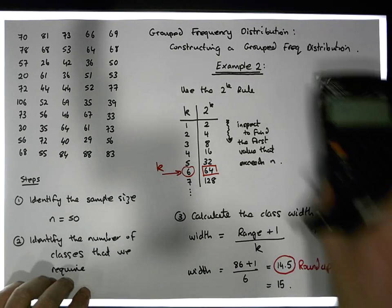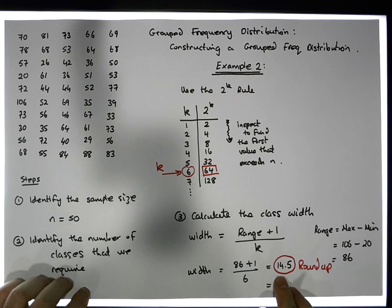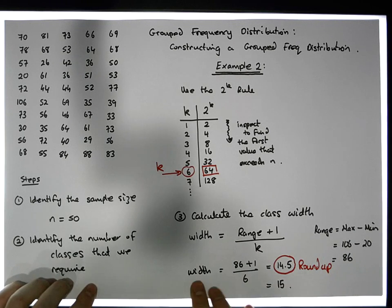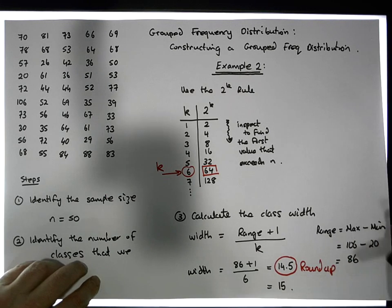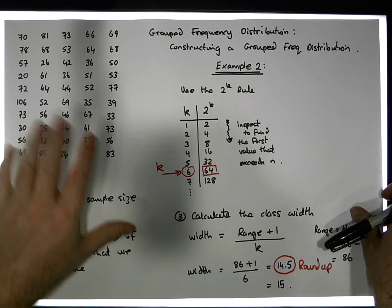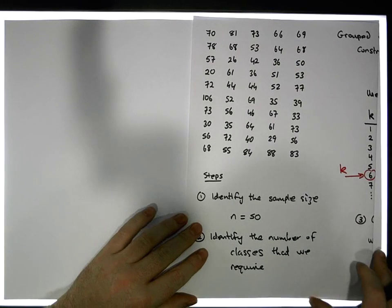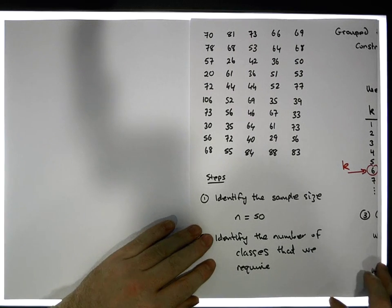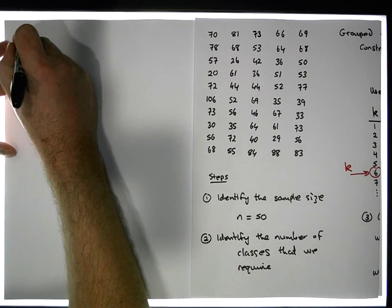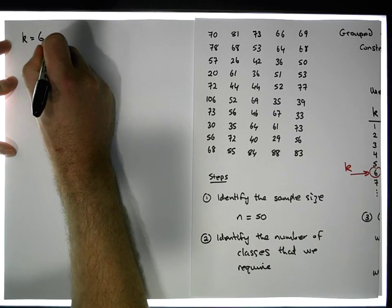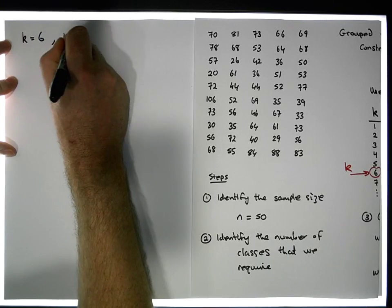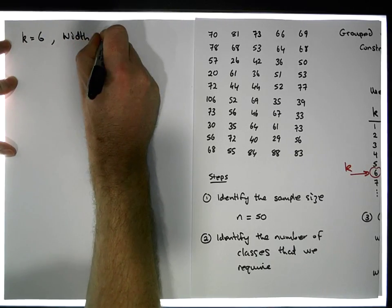Now that we know the width of the classes, we can actually construct the distribution. Let's keep in mind that the number of classes k is equal to 6, and the width of a class should be equal to 15.